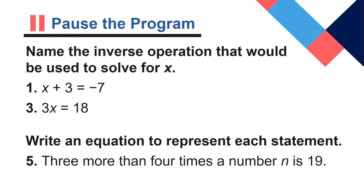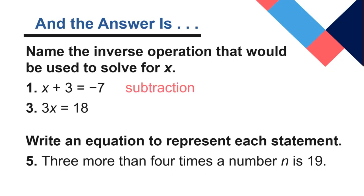Now, we'll have you get your brains in gear by doing a few things. What you see on this, pause the program slide. And the answer is, well, you would subtract and you would divide. And then write an equation: 3 more than 4 times the number n is 19. 3 more than 4 times the number n equals 19. Now, if you wrote 3 plus 4n equals 19, that's fine. It doesn't matter order for addition. Remember, subtraction does make a difference.